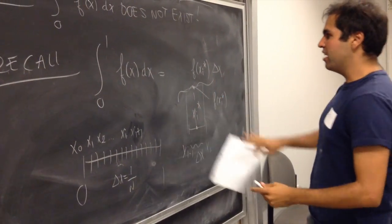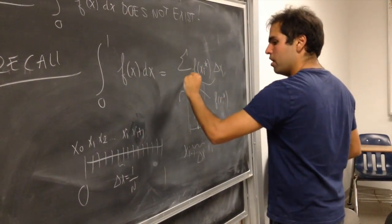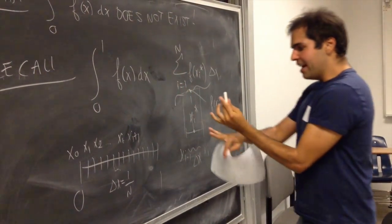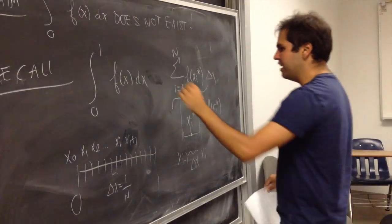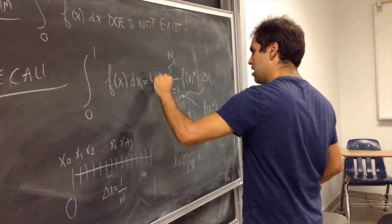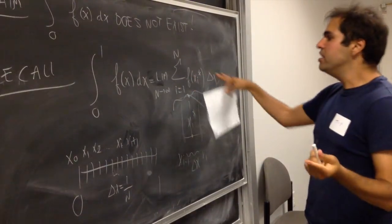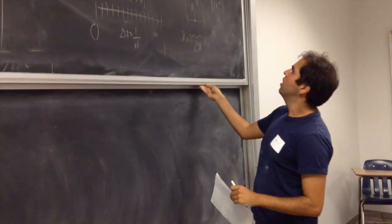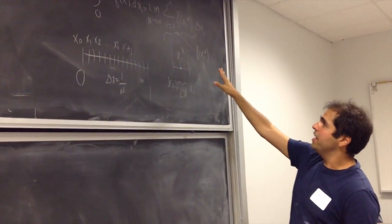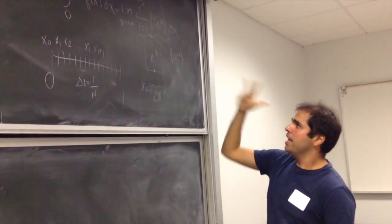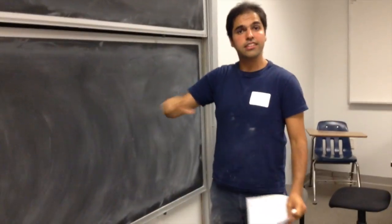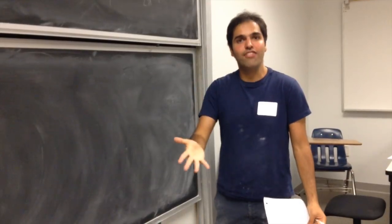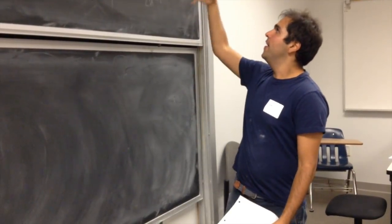This gives you a bunch of rectangles, you sum them up from 1 to n. And then lastly, you make the rectangles really thin by taking a limit, n goes to infinity of that sum. Alright? And I'm claiming, and so here's the thing, if this integral exists, then it's independent of the choice of xi star. That's the definition of the Riemann integral.